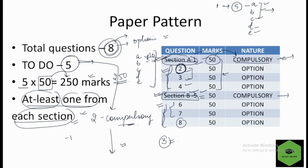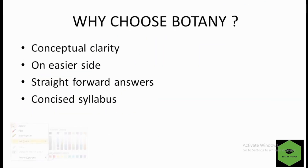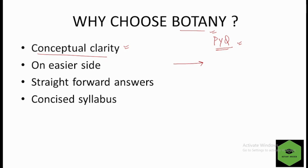Now, why should you choose Botany as an optional subject? First, if you look at previous year question papers, the questions are very straightforward. For example, if they ask about a specific fungus, you directly write the answer — there is no ambiguity. The only requirement is conceptual clarity. If your concepts and facts are clear, you can easily write the answers because the questions are very direct.